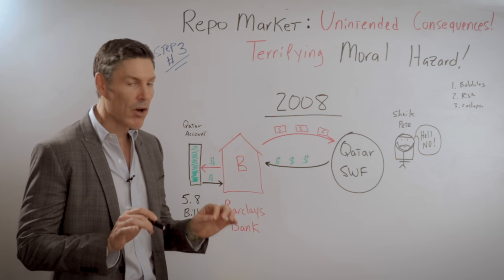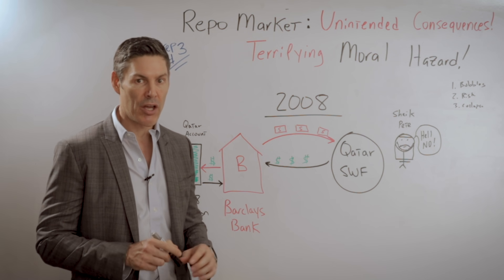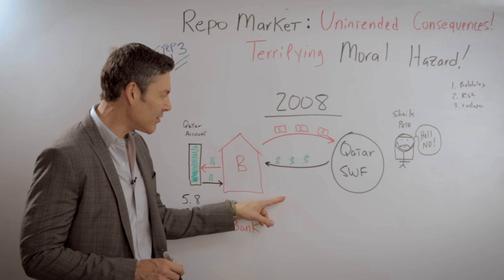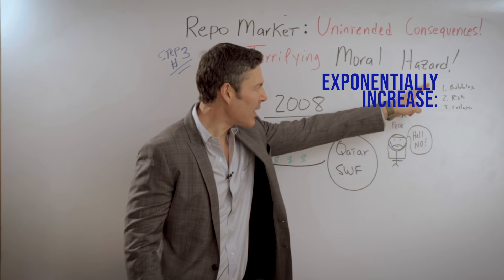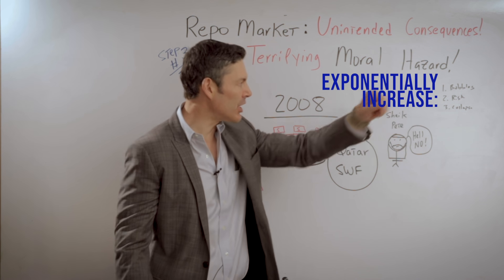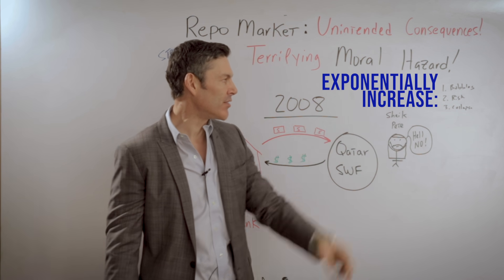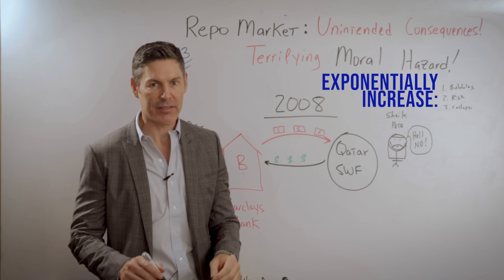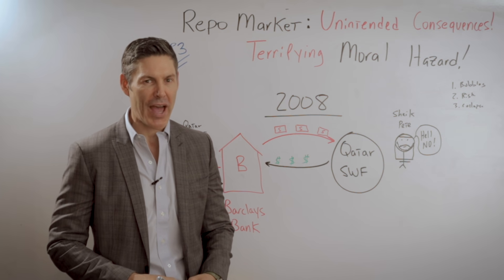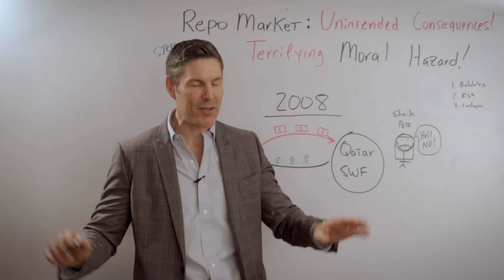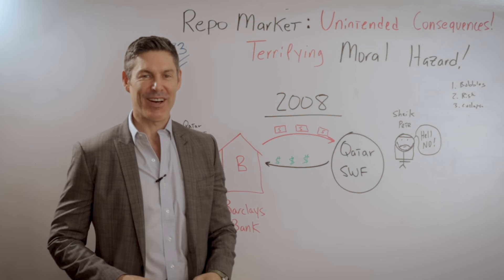If the Federal Reserve takes over all of the financial markets, including the repo market, this is going to happen in spades. This will exponentially increase the size of bubbles, exponentially increase the size of risk, and exponentially increase the size of the next collapse. For more content that will help you build wealth and thrive in a world of out-of-control central banks and big governments, check out this playlist right here, and I will see you on the next video.